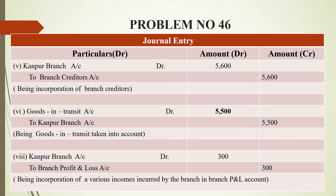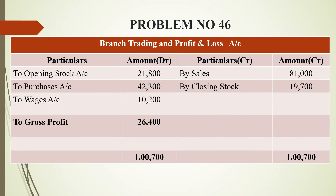These are the journal entries for incorporation of branches. In the branch trading and profit and loss account, we will first look at the trading account. On the credit side, we get closing stock and sales — that is $81,000 and $19,700. On the debit side, we have opening stock, purchases, and direct expenses including wages and expenses, totaling $10,200. The grand total on both sides is $1,700, giving a gross profit of $26,400.